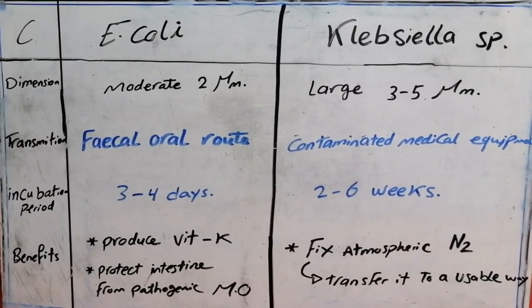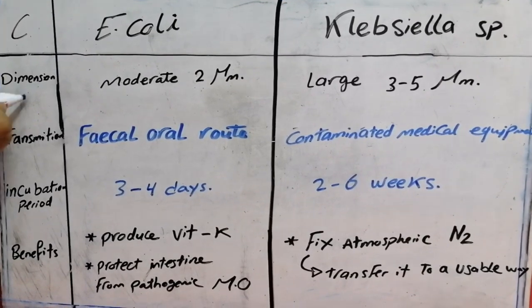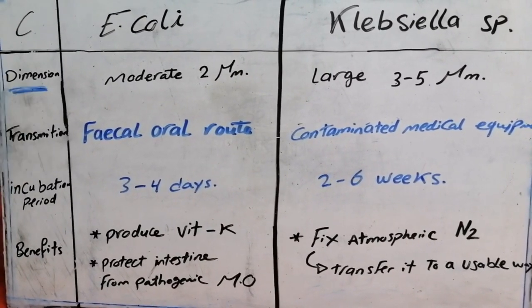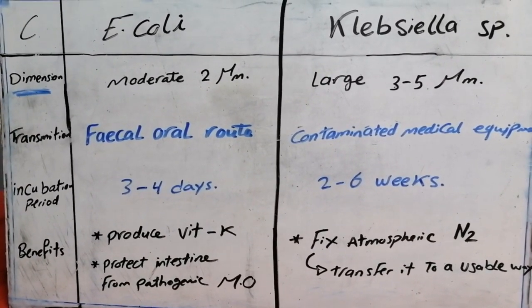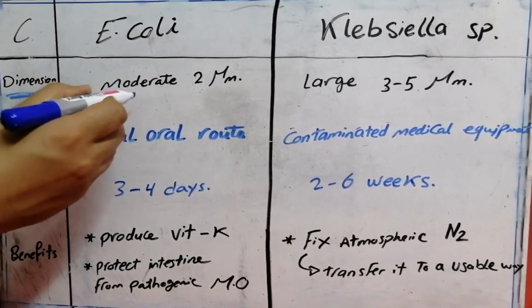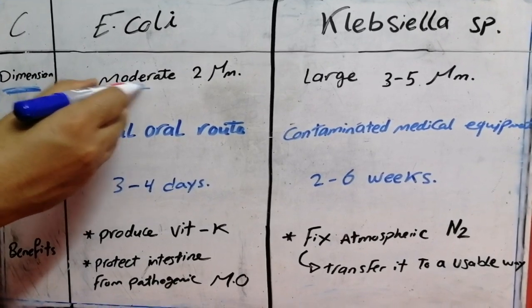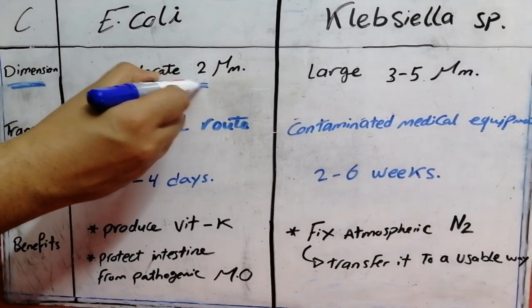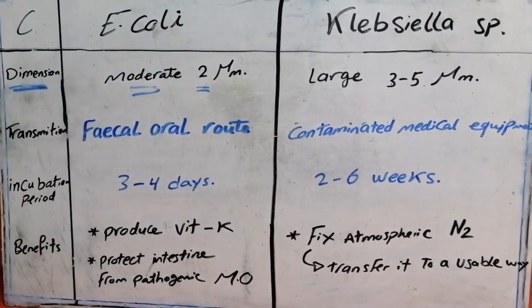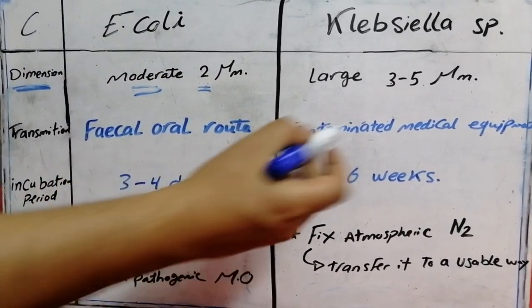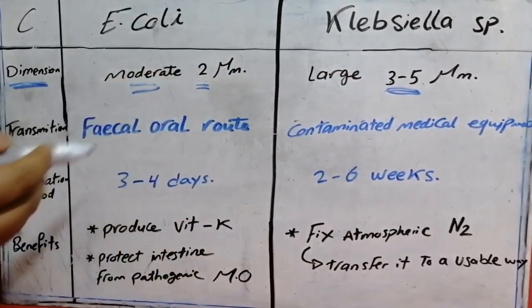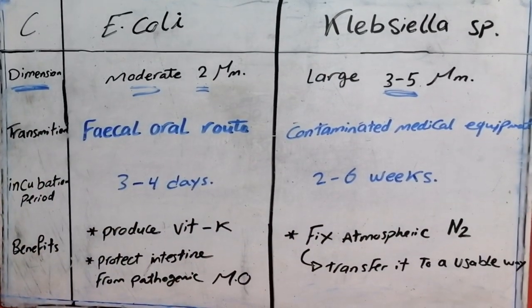E. coli is small to moderate colonies, around 2 micrometers, while Klebsiella is large colonies from 3 to 5 micrometers.